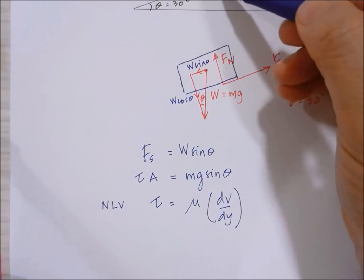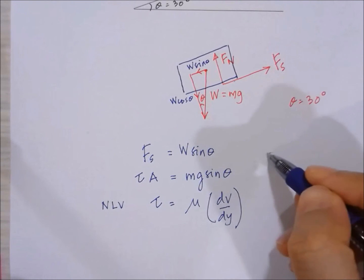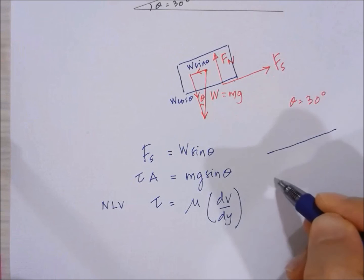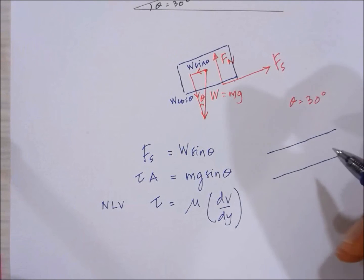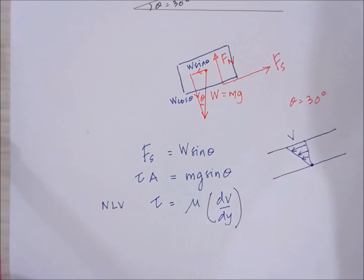If we consider the lubrication oil, this is the block and this is the ramp. The fluid which is in contact with the ramp will have zero velocity, and V is what we want to calculate.